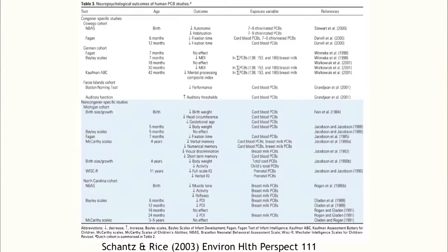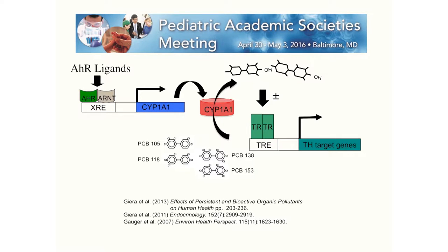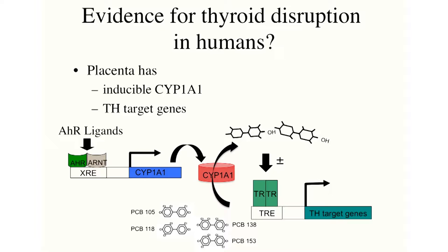One important thing is that this can happen in tissues without changing hormone levels in the blood. That's really the big take-home lesson: thyroid hormone levels in the blood don't always map to interference with thyroid hormone action in specific tissues. We've shown this clearly in animals, but it's important to bring this to humans. Placenta is a good tissue to focus on because you can obtain placentas, it has inducible CYP1A1, and there are well-known thyroid hormone response genes in placenta.